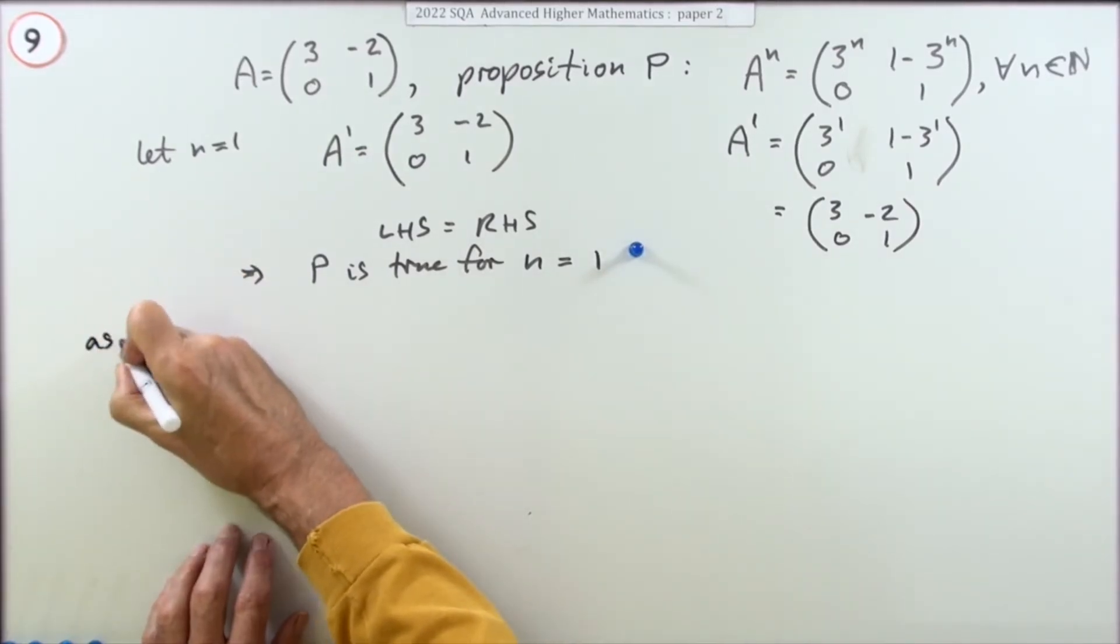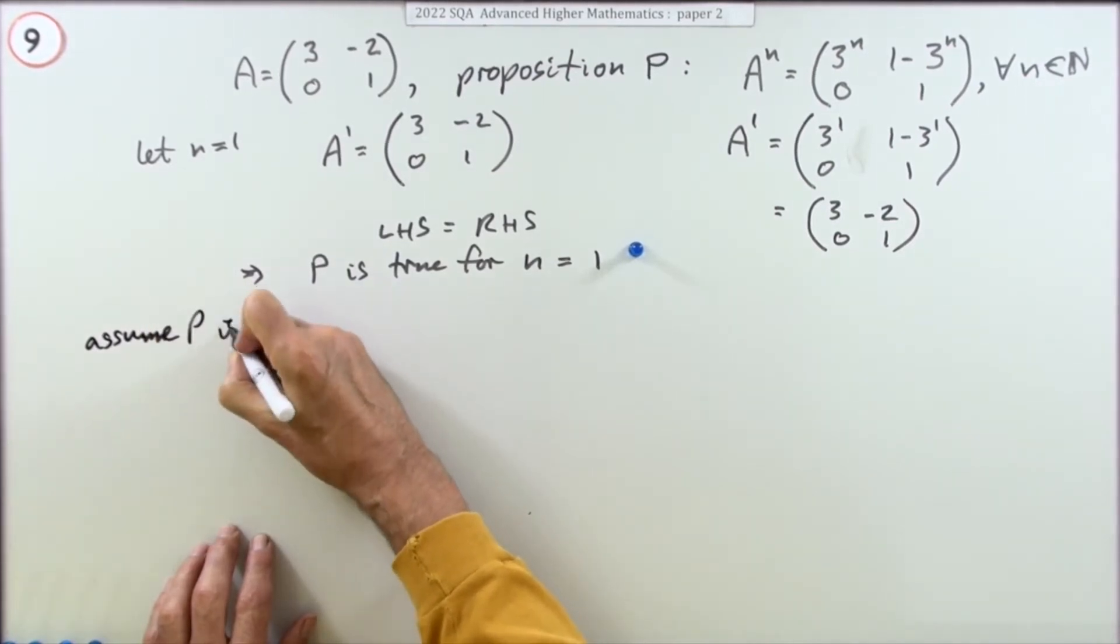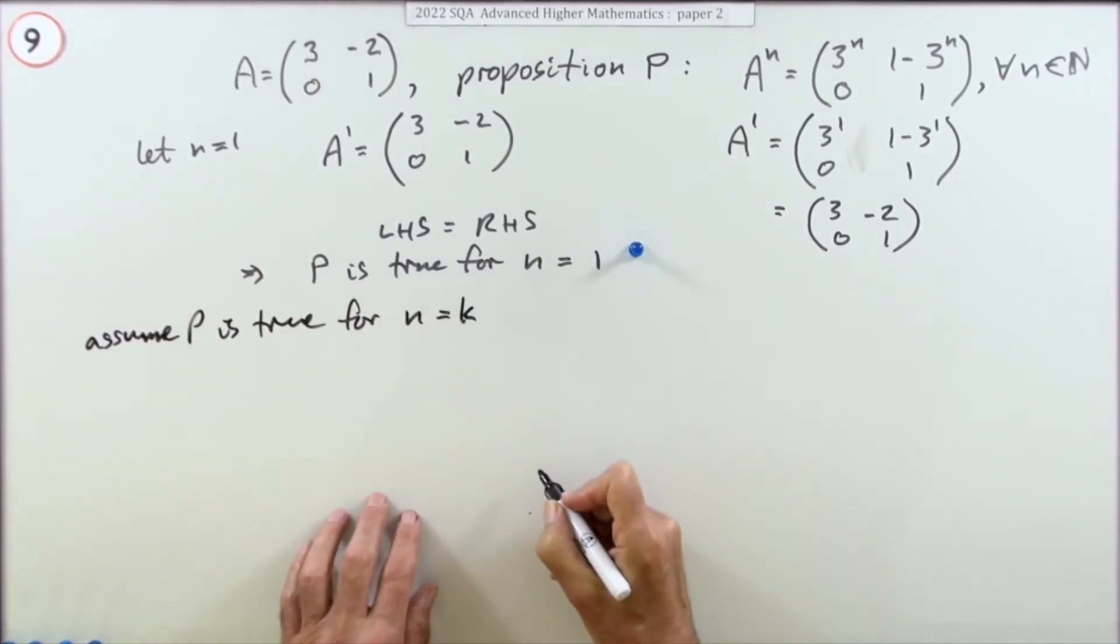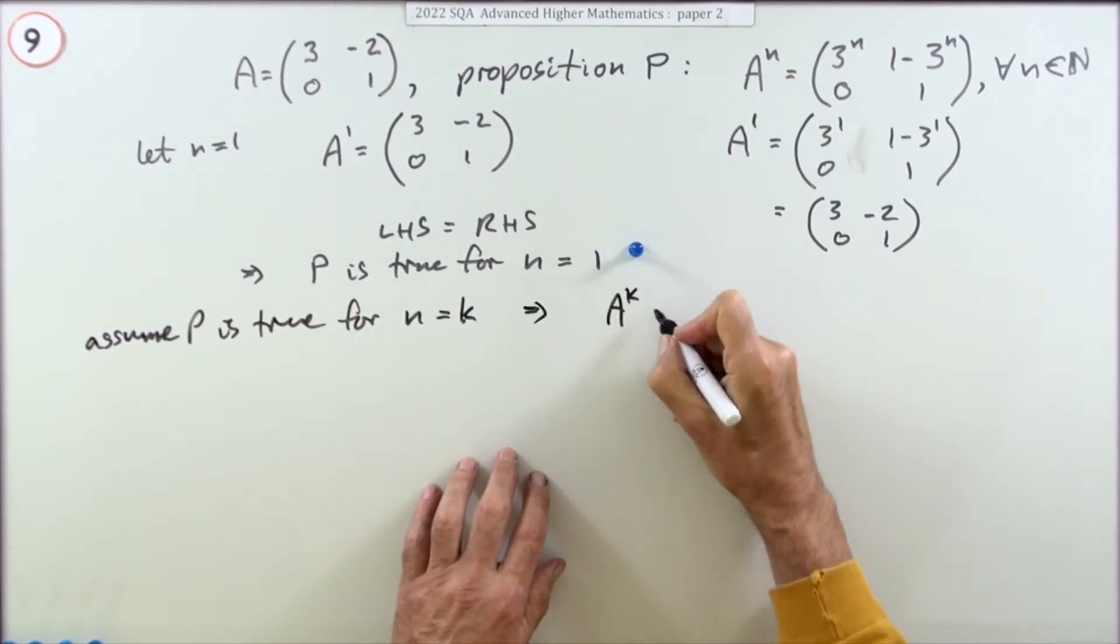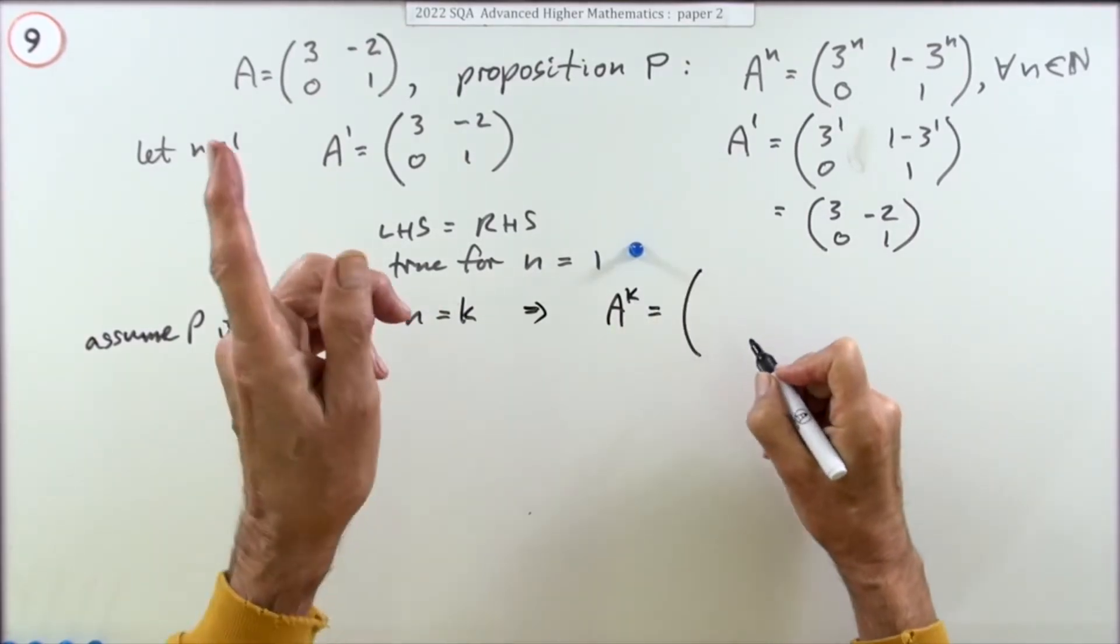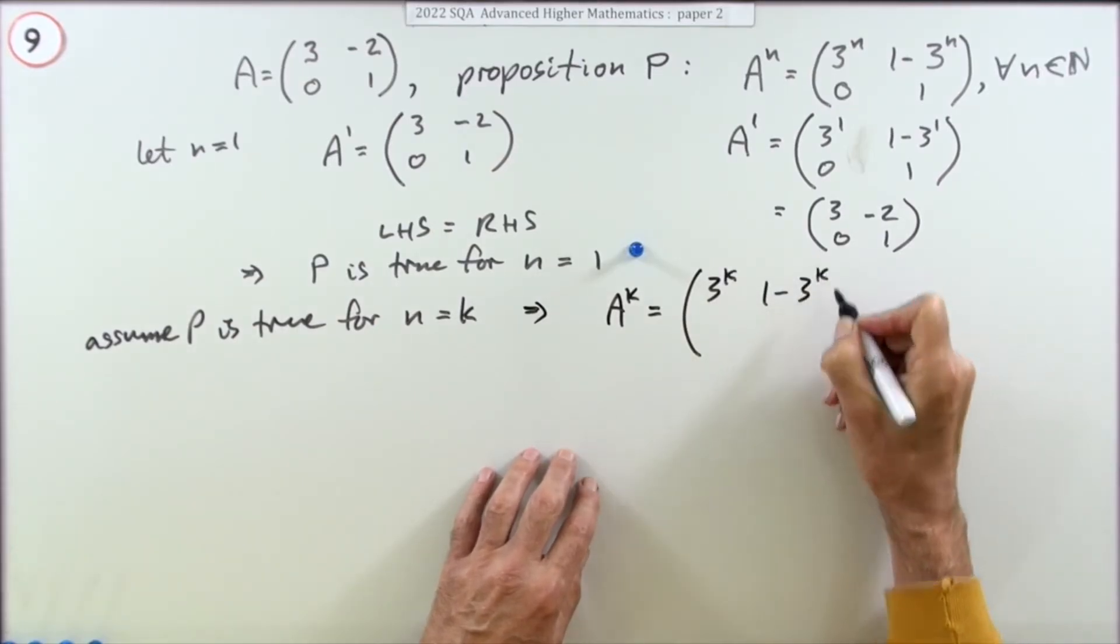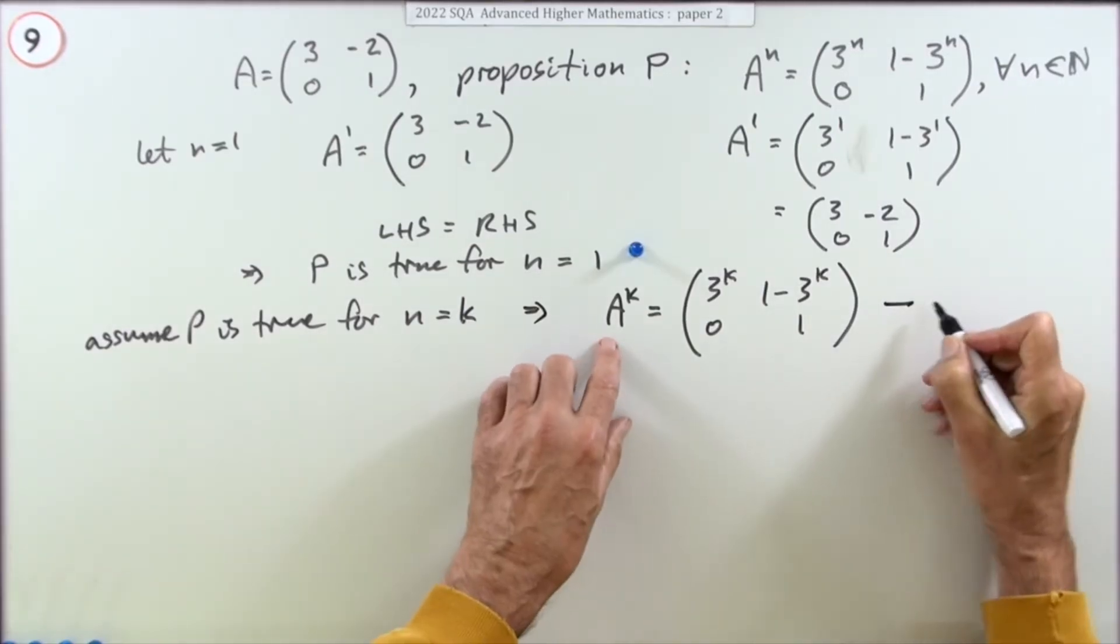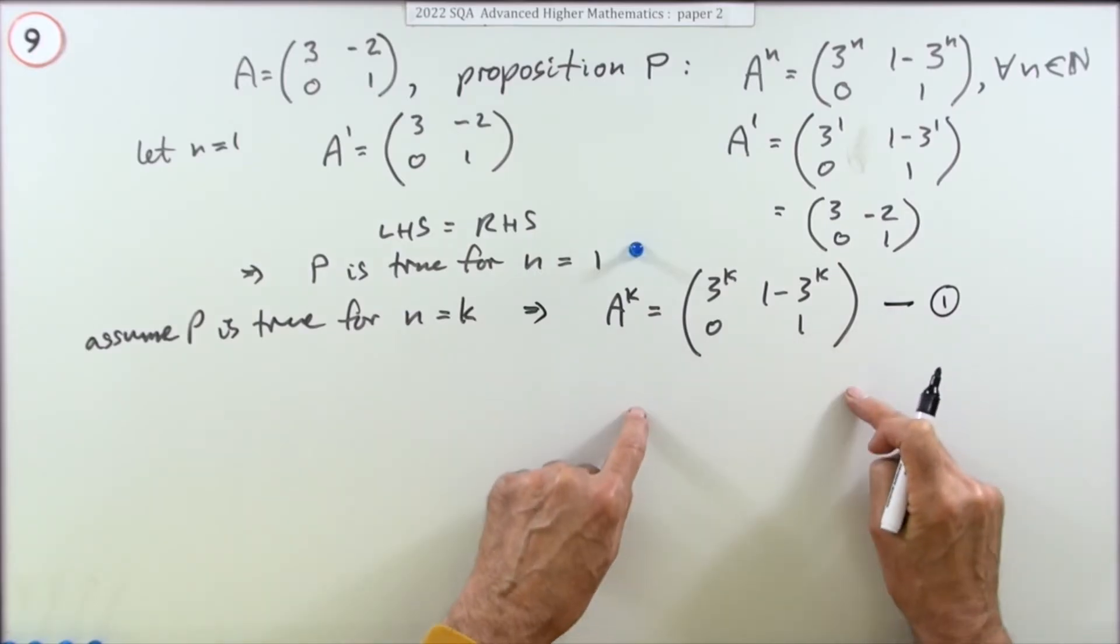So you make the inductive hypothesis. Now what we do is say, let's just assume P is true for n equals some value like k. If that was the case, then A to the k would be, if it was true, (3^k, 1-3^k; 0, 1). That's the inductive hypothesis. I'm going to name that because I need to use that in the following step.